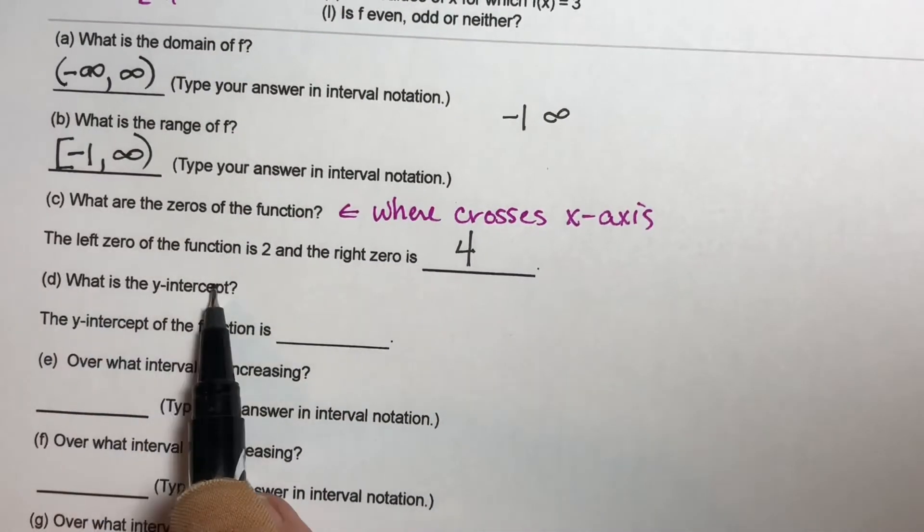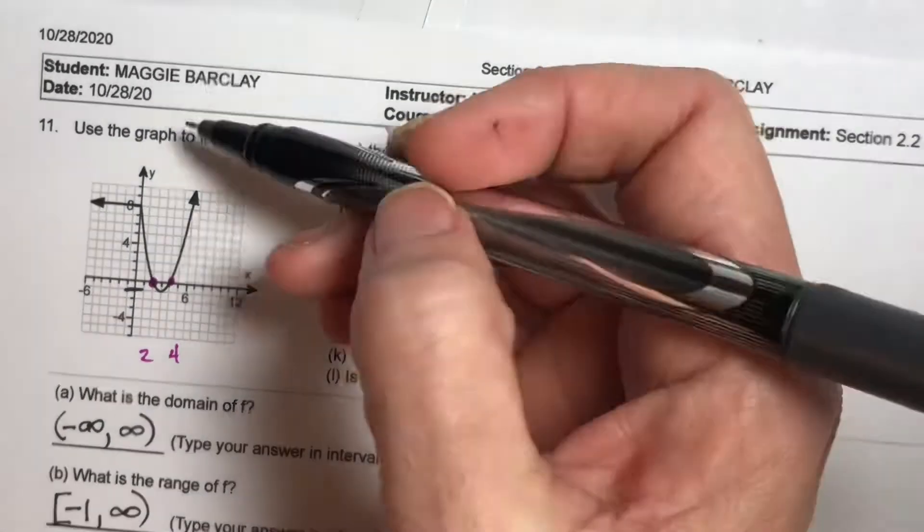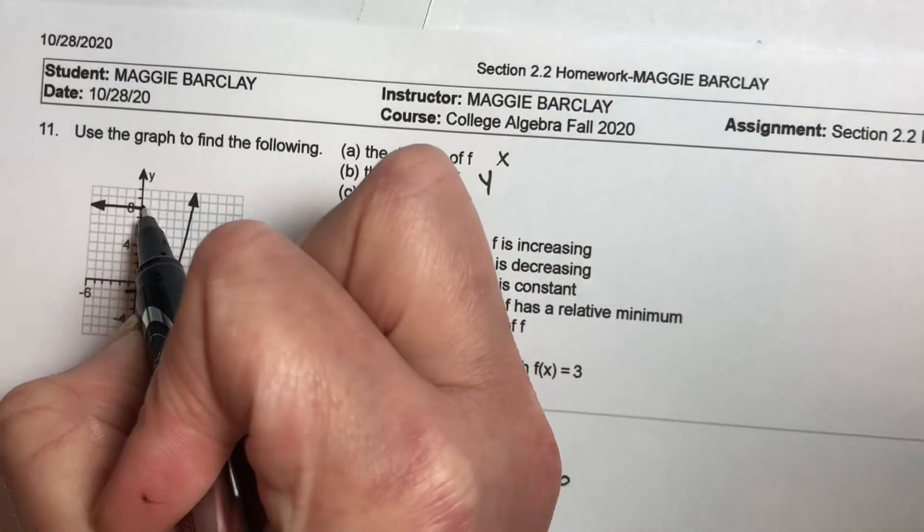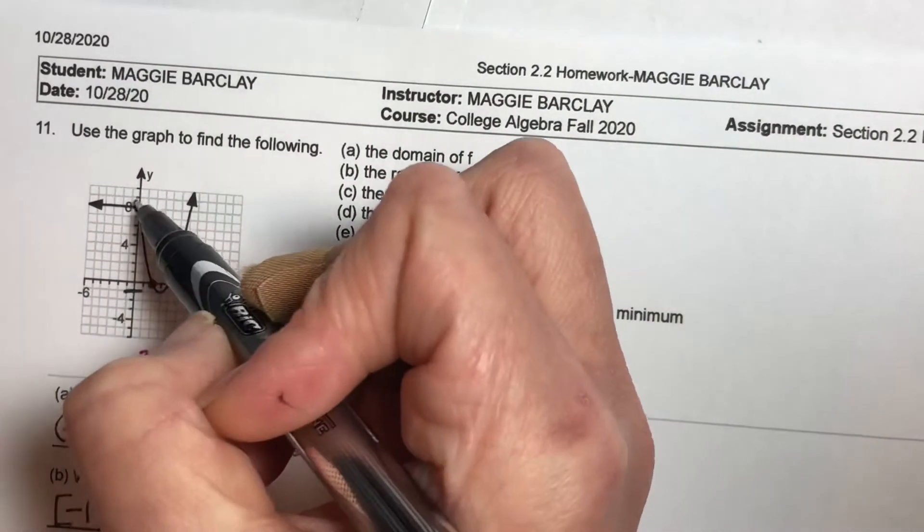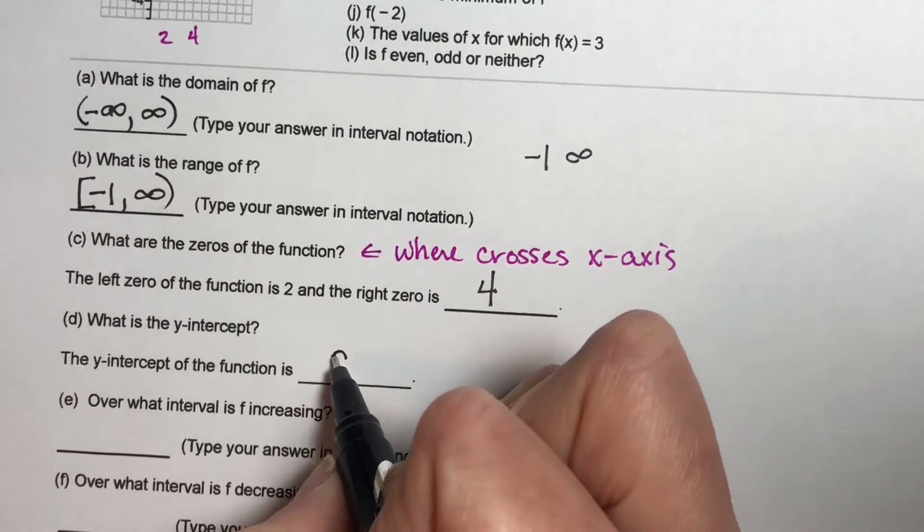What is the y-intercept? So where do we cross the y-axis? If you look at your picture, you cross the x-axis right here, which is at positive 8. So your y-intercept is 8.